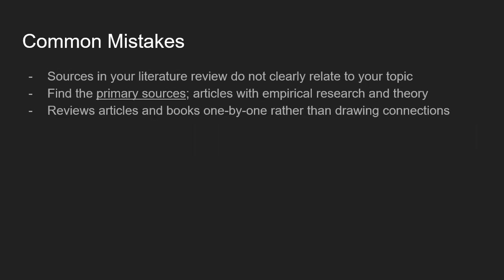Some common mistakes made when writing a literature review include including sources that don't clearly relate to your topic, or summarizing a secondary interpretation of a source. You want to identify primary sources — if someone cites a piece of research that seems relevant, go find that article or book and read it yourself. Also, try to summarize articles with empirical research and theory, meaning articles based on actual data collection and analysis. That's the heart of research.